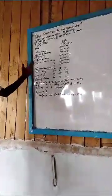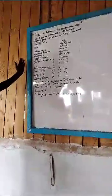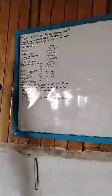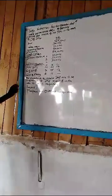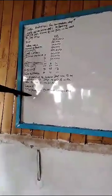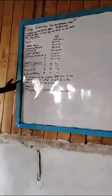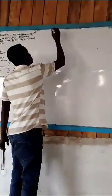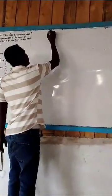Now after you have done the overhead distribution schedule, the examiner requires you to reapportion the overhead of service department C to production departments A and B. Let's do it. So you come here and write the overhead distribution schedule.